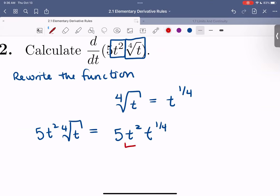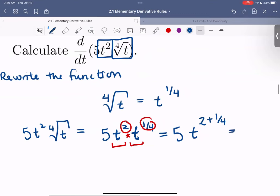Our function 5t² times the 4th root of t equals 5t² times t^(1/4). Now we really see that we have the same base t, just different exponents, 2 and 1/4. When we multiply functions with the same base, t and t, we can combine them by adding exponents. This becomes 5t^(2+1/4), which equals 5t^(2 1/4).